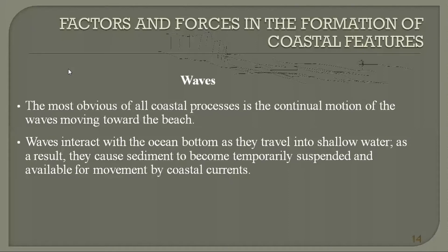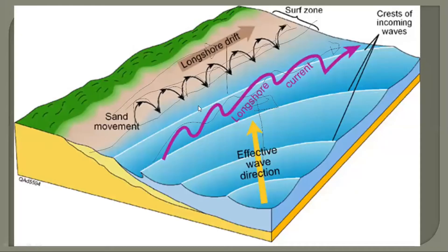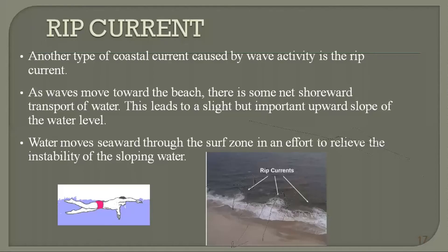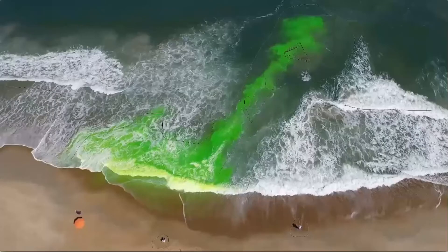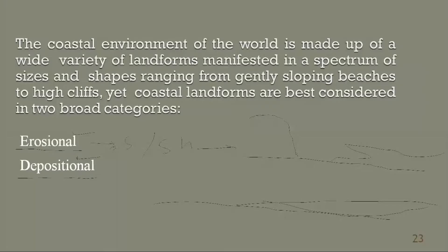We discussed about waves, longshore currents, and rift currents, and how sand is transported along the coast. We mentioned that with rift currents, the water rushes back and as it goes back the velocity of the current increases. We also covered tides, climate, rainfall, temperature, wind, and gravity.